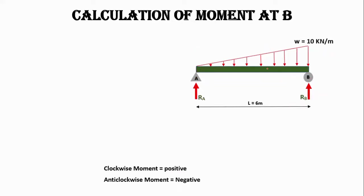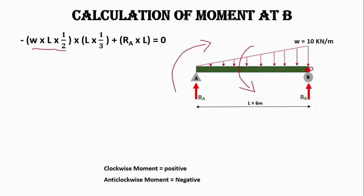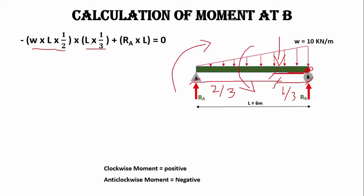Similarly, we calculate the moment at point B. The triangular load will bend the beam in the anti-clockwise direction and the support will resist in the clockwise direction. The moment arm here is one-third of the length, because the centroid from the shorter edge is at L/3. The positive sign indicates the support resists the moment in the clockwise direction. RA is the support reaction and L is the total moment arm.